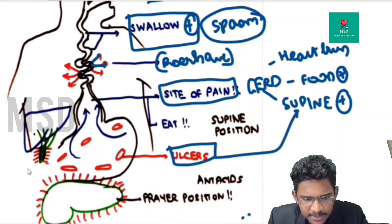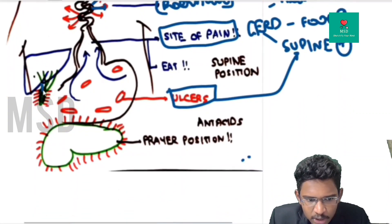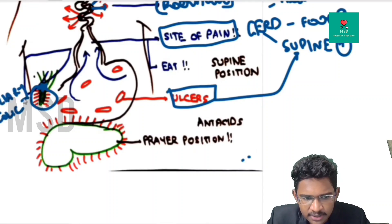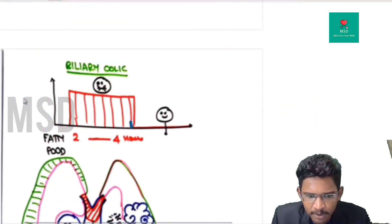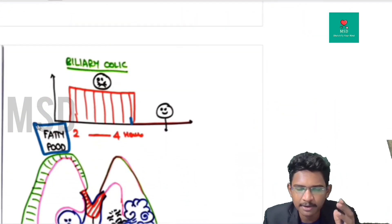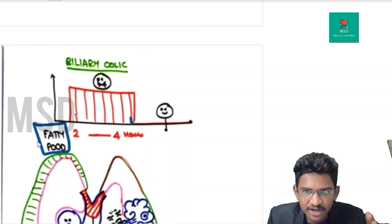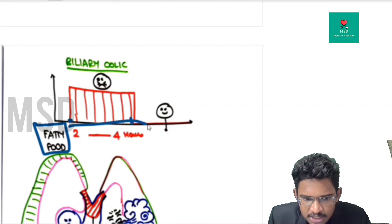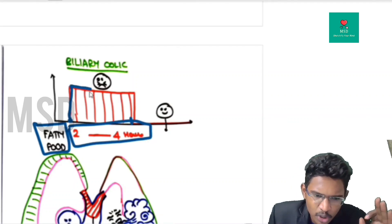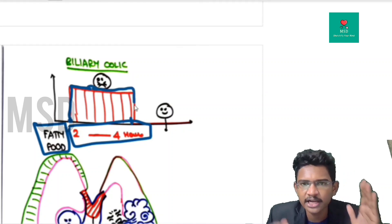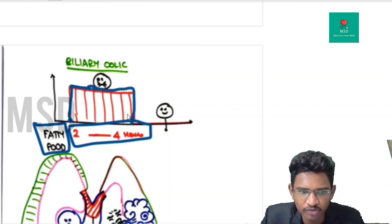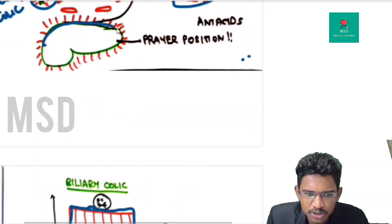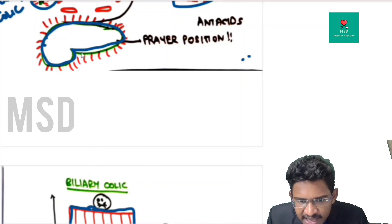In biliary colic, the biliary duct undergoes spasm. After eating fatty food, the gallbladder secretes bile, and pain starts two to four hours after eating. The pain is severe and constant in nature, and after approximately four hours it resolves automatically. This pattern is a useful clue for biliary colic.